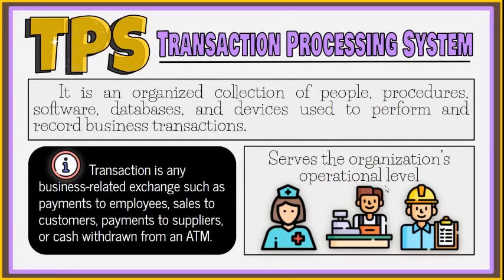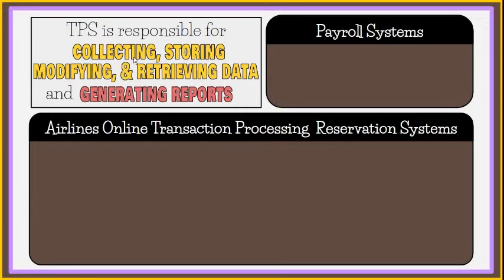The operational level is composed of employees who are at the bottom level of the organization's hierarchy. Examples of users at this level include cashiers at a point of sale, bank tellers, nurses in a hospital, and other positions concerned with performing day-to-day business transactions. A TPS collects input data from transactions and events recorded by operational-level employees, and is responsible for sorting, listing, merging, updating, storing, modifying, and retrieving data pertaining to transactions.